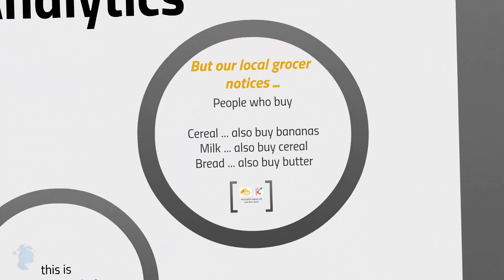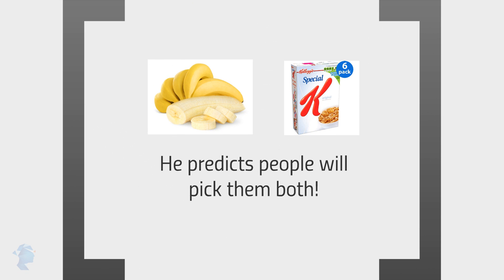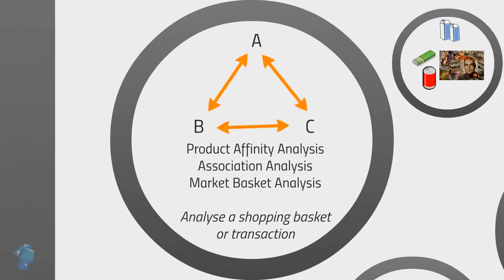Continuing from our grocery example, our local grocer sees that most people who buy cereal also buy bananas, so he places a smaller banana basket next to the cereal shelf since he predicts that most people will pick them both up. This is predictive analytics. Retailers are very interested in understanding relationships between products — if a person buys product A, is he also likely to buy product B or C? This is called product affinity analysis or association analysis, and is commonly used in the retail industry. It's also called market basket analysis and refers to techniques applied to analyze a shopping basket or transaction.